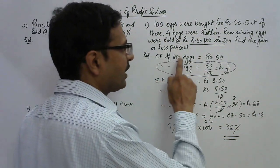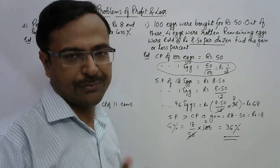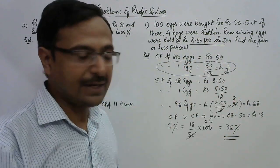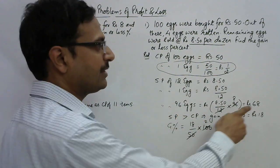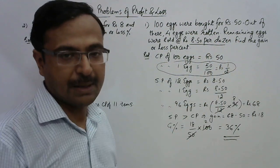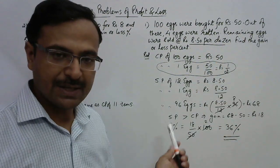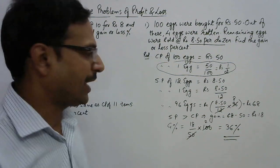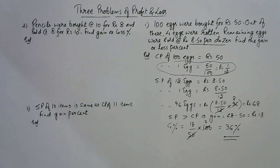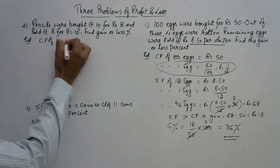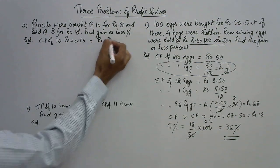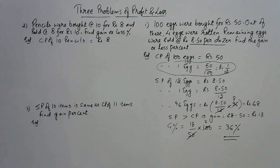The logic behind solving this question is: the cost price of 100 items is already given, so we just need the selling price of the remaining eggs sold at rupees 8.50 per dozen. We compare the selling price and the cost price — if selling price is greater, there is gain; if cost price is greater, there is loss. Now let's see the second question. A person purchases pencils at 10 for rupees 8.